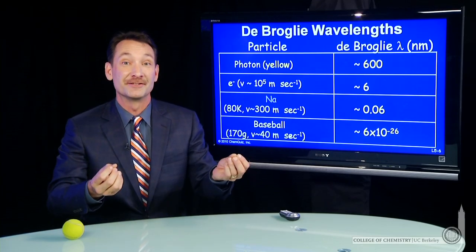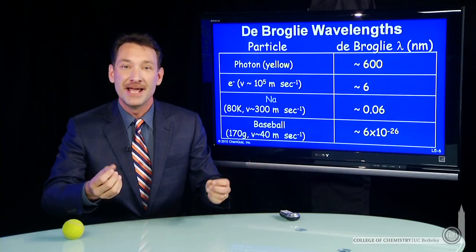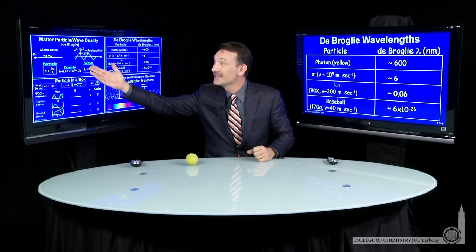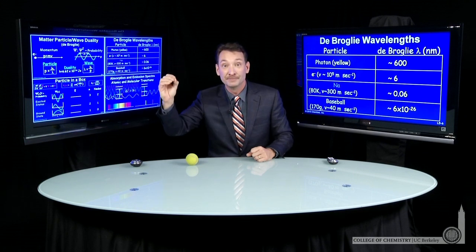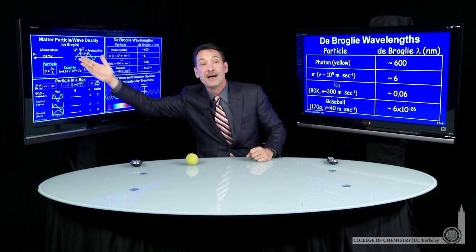Particles can behave like waves. They can have a wave-like property, and the wavelength is given by the de Broglie relationship. A particle that has a momentum, a mass, and a velocity will have a wavelength given by Planck's constant divided by that momentum.